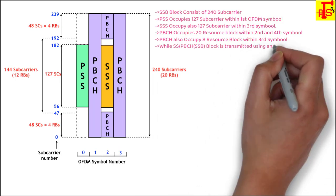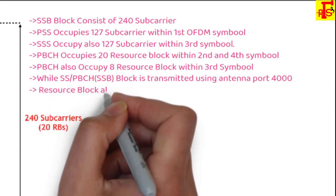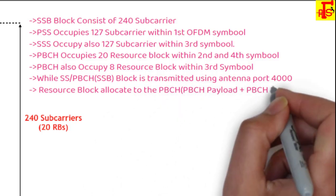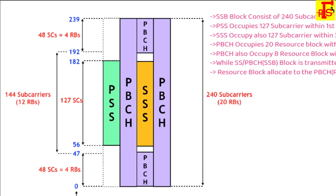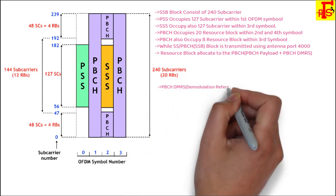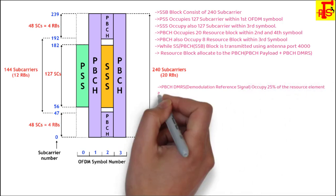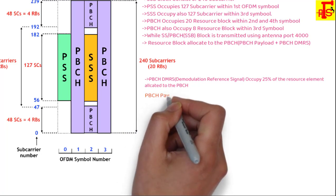SSB block is transmitted using antenna port 4000. Resource blocks allocated to PBCH accommodate both the PBCH payload and PBCH demodulation reference signal. DMRS occupies 25% of the resource elements allocated to PBCH. If PBCH has 4 RE, 1 RE will be allocated for DMRS.